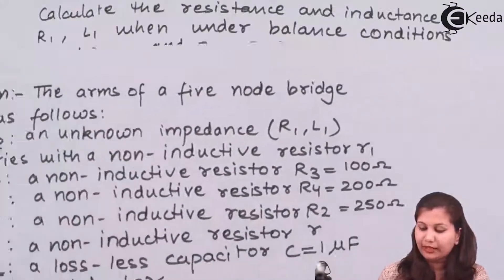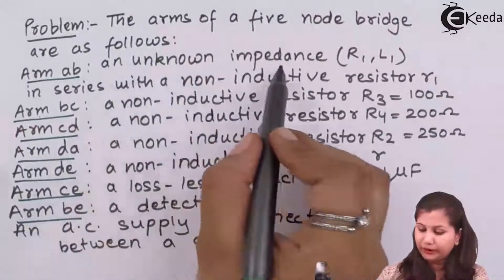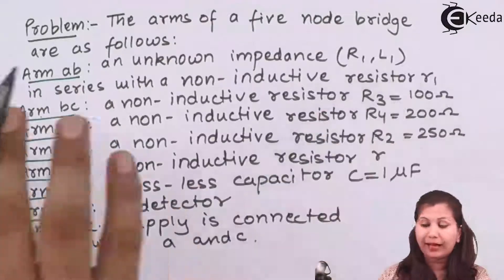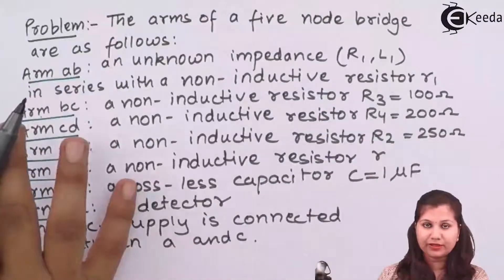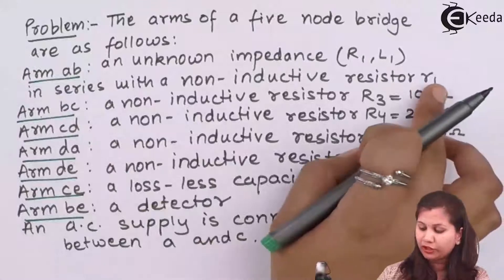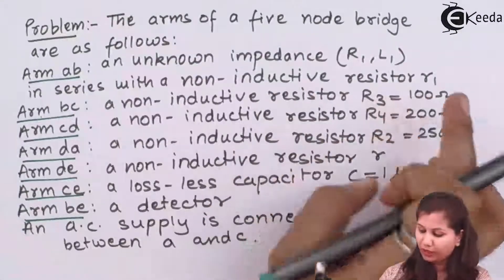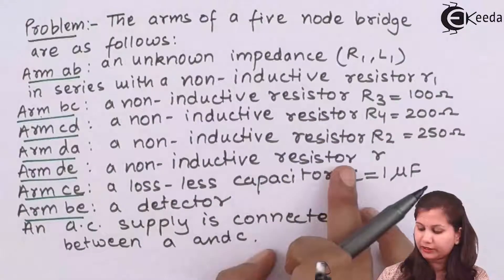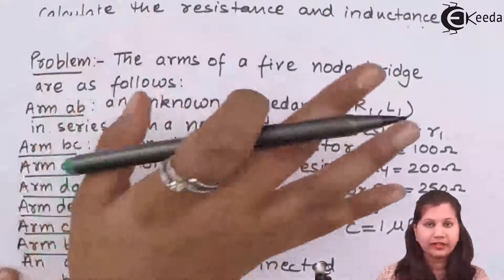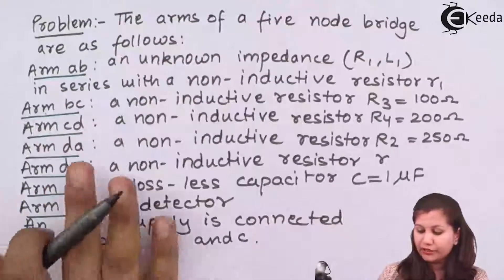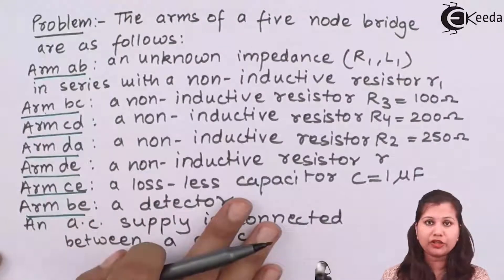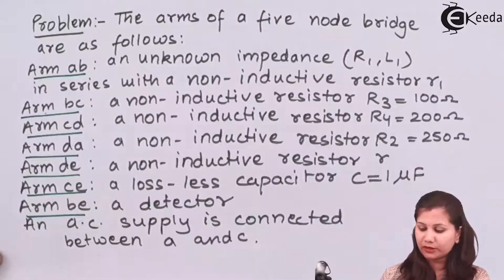We have to calculate the unknown impedance R1 and L1 under balance conditions. The values of small r1 and R are given to us. So let us first draw this 5-node bridge and then try to solve this problem.